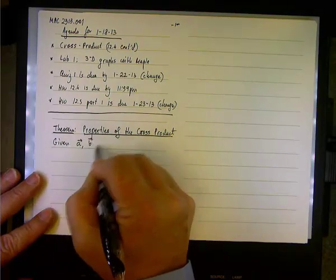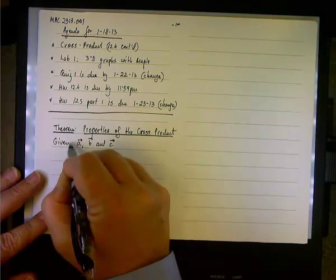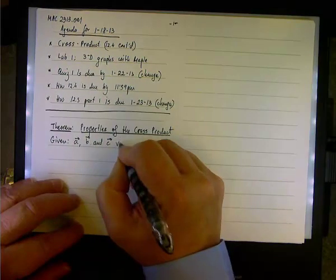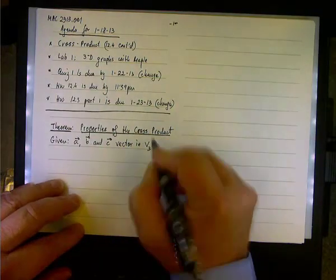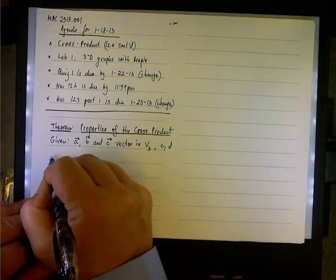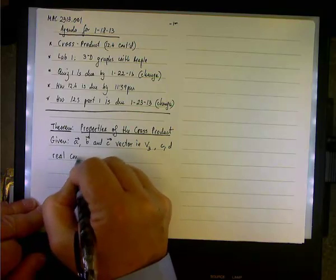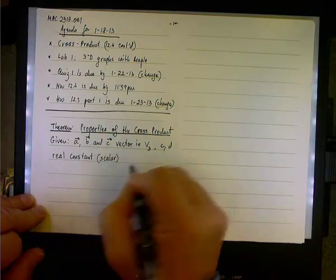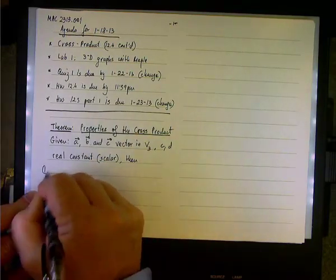Given, let's say, we have three vectors a, b, and c, vectors in R3, actually vectors in V3, three-dimensional vectors, and let's do c, d, real constant. And those, of course, are scalar constants. Okay, then we have the following properties.